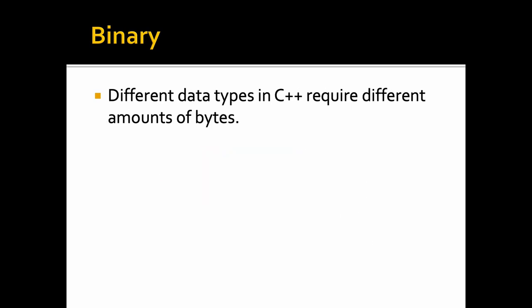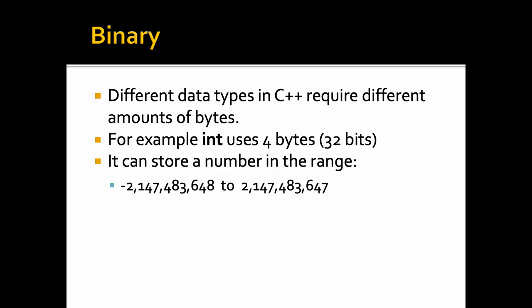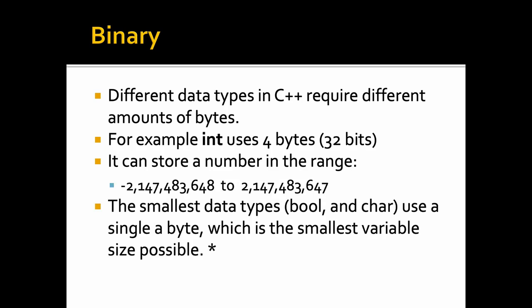Different data types in C++ require different amounts of bytes. For example, a standard int uses 4 bytes, or 32 bits, and can store a number in the range of roughly minus 2 billion to plus 2 billion. The smallest data types, bool and char, use only a single byte. However, as we'll see by exploring this lecture, we can actually address information much smaller than that by using these bitwise operations.